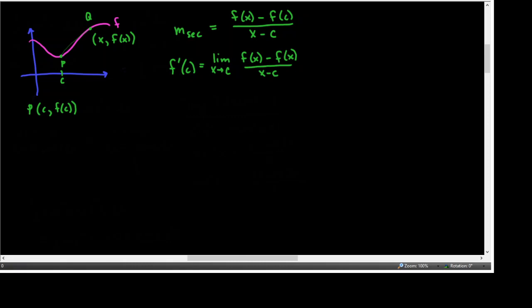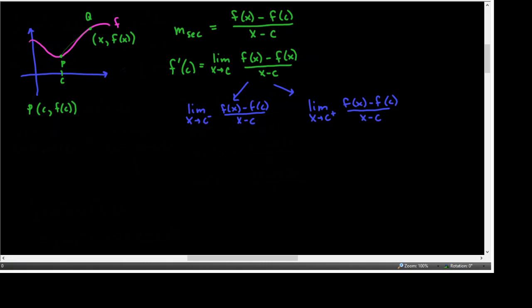One thing that has to be true for the limit as x approaches c to actually exist — there are two requirements that have to both be met: the limit as x approaches c from the left of that expression, and the limit as x approaches c from the right of that expression. For the limit to exist, those two one-sided limits have to be the same. These are called the derivative from the left and the derivative from the right.